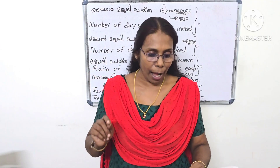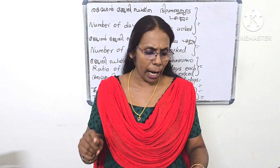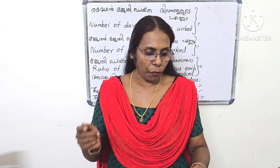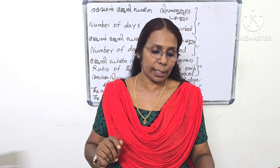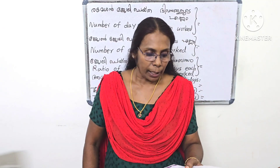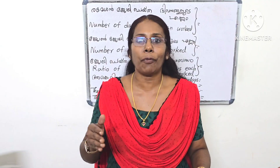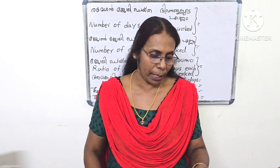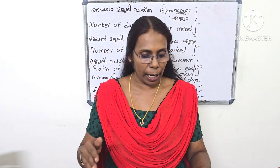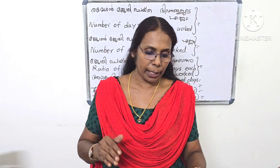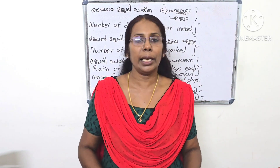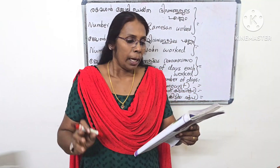Remesha and John took up a contract for some work. Remesha worked the first 6 days and John worked 7 days. They got 6,500 rupees total. They divided it in the ratio of the number of days each worked. How much did each get?